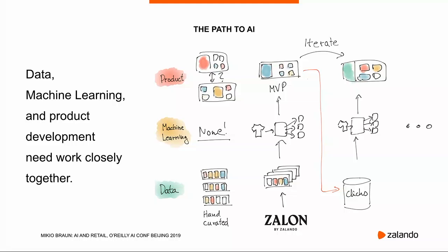Only in the third step did we finally get the click data, and we could start doing the usual machine learning. The message here is that once you go to the end consumer, you have to have a very iterative way of building products, and it's not always just about the best machine learning method.